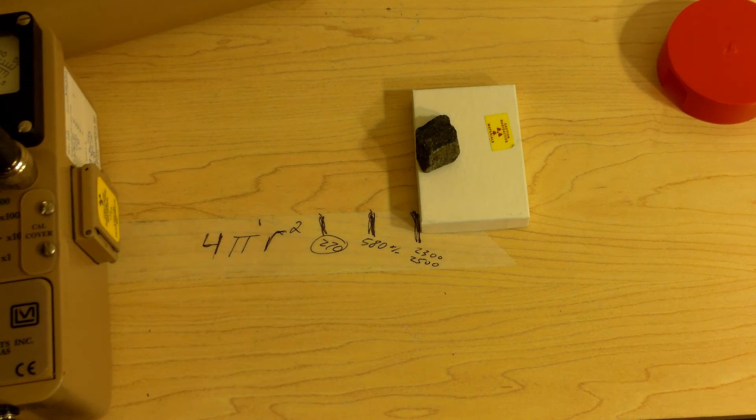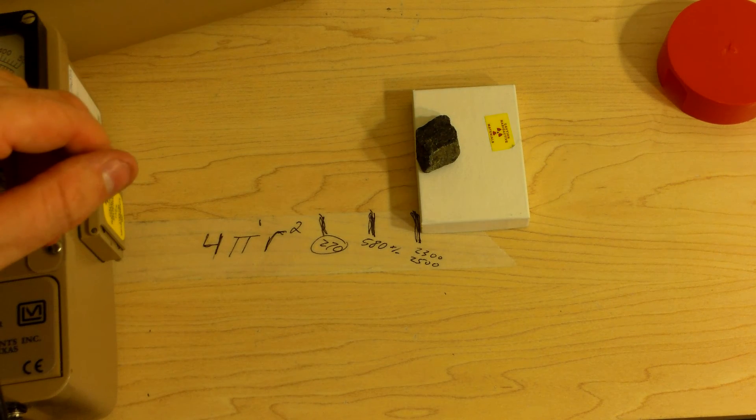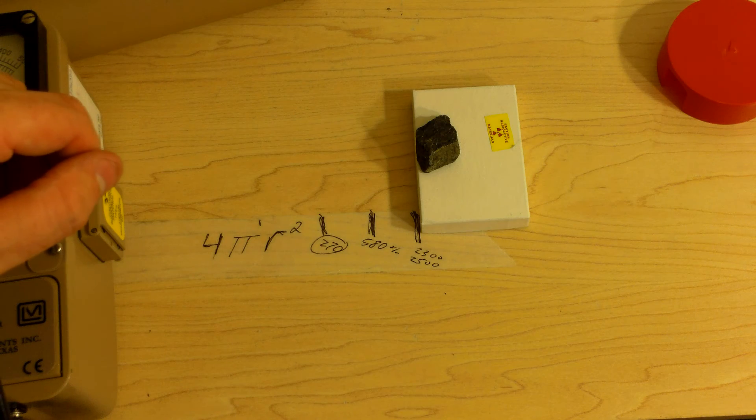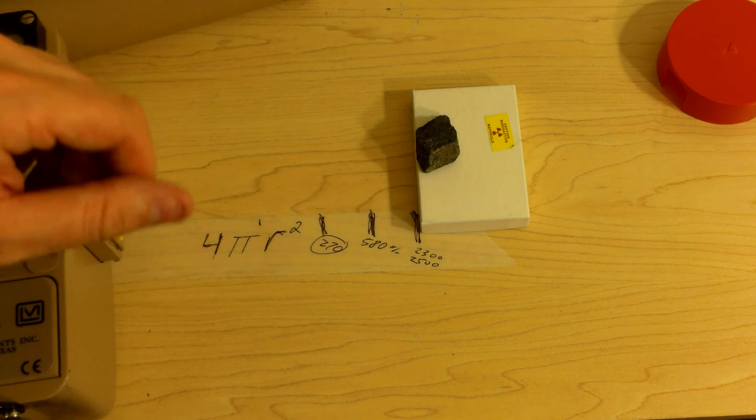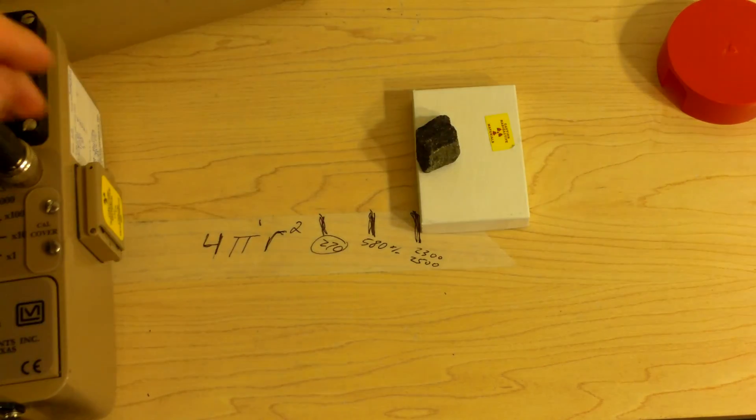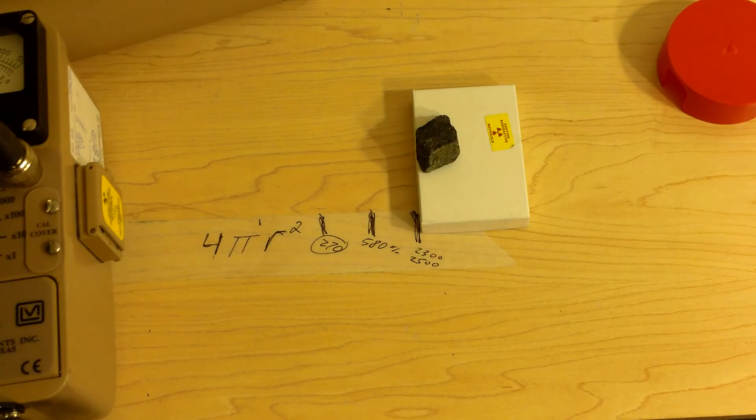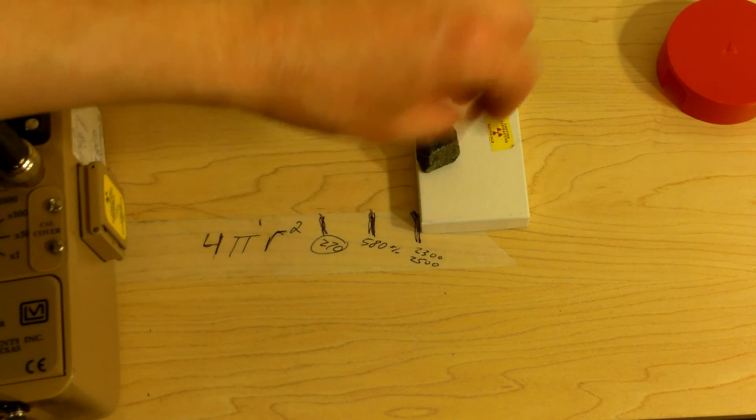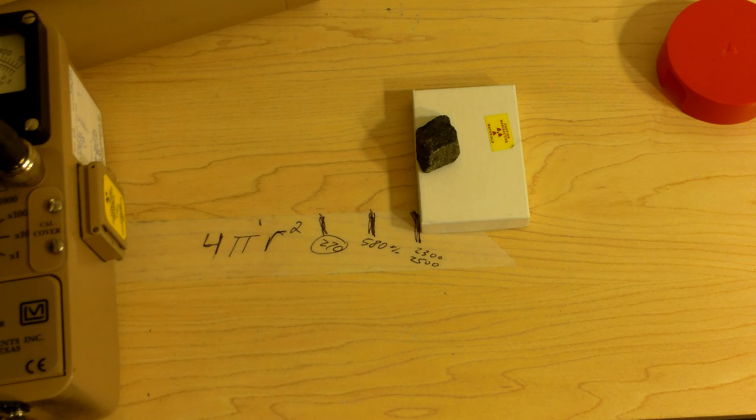So, does that answer your question? Distance is your friend. Shielding is your friend. And low exposure time is your friend. Those are the three things. The three things which govern dose, beyond the obvious dose rate of the source itself.